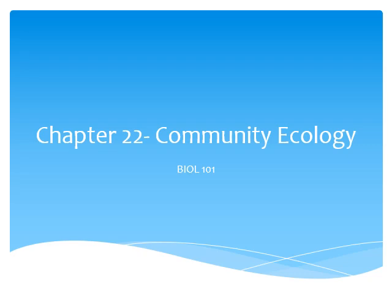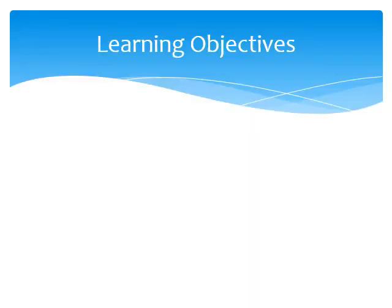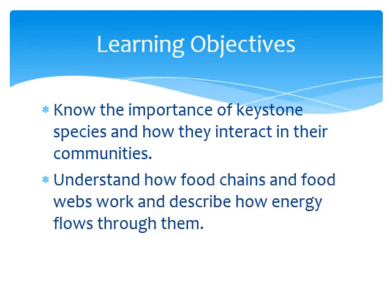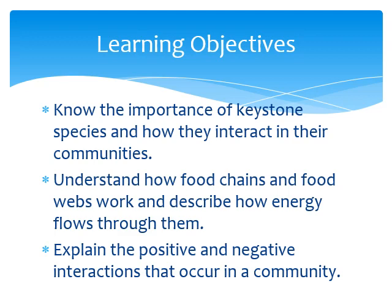This is Chapter 22, Community Ecology. By the end of this lecture you should know the importance of a keystone species and how they interact in their communities. More specifically, we're going to be talking about bees in this chapter. You will also understand how food chains and food webs work and describe how energy flows through them. You're also going to explain the positive and negative interactions that occur in a community.